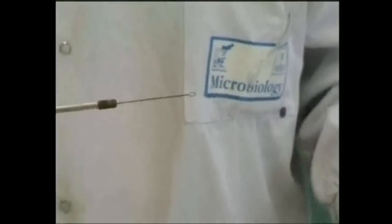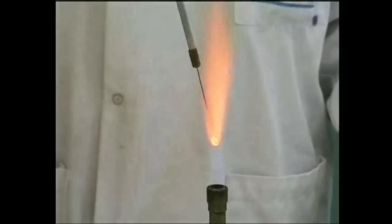After inoculation, the loop or wire should be re-sterilized by introducing it into the Bunsen flame, but slowly to avoid further aerosols. Just insert the loop into the pale blue cone of the flame.